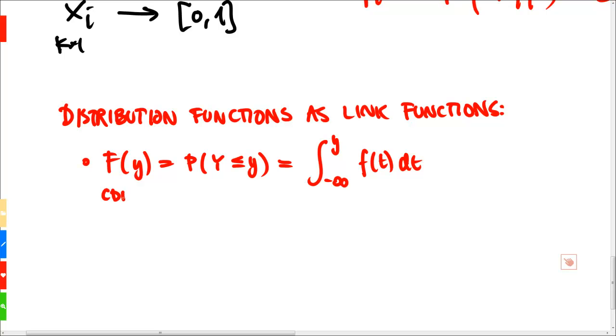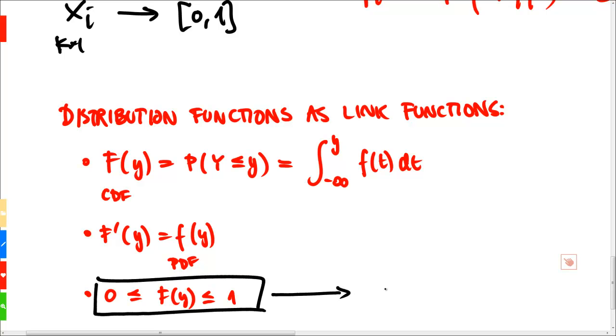Capital F of y is our accumulated density function, and we can consider f prime of y, that we typically define as small letter f of y, and this is our probability density function. Note that this distribution function has the property that F of y is bounded between 0 and 1, and that's exactly what makes it a useful and valid link function.